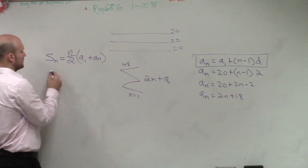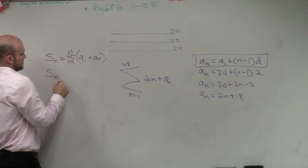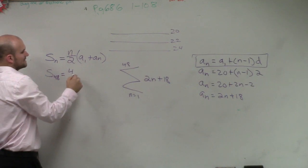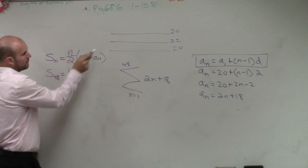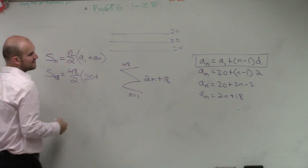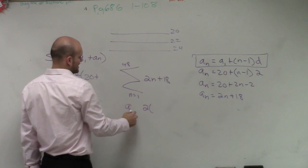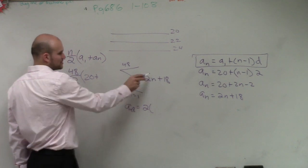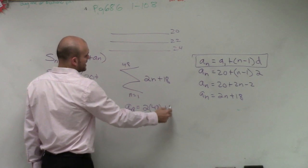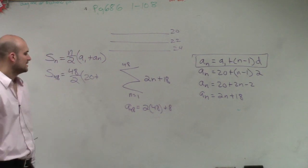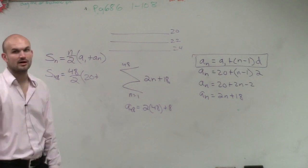Where n is the number of rows, so the sum of 48 rows is going to equal 48 divided by 2 times a sub 1, which is 20, plus a sub n. Well, to figure out a sub n, I need to do 2 times 48 plus 18. So 2 times 48 is going to be 96 plus 18 is going to be 114.